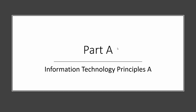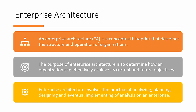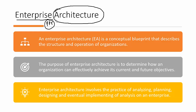So Part A is Information Technology Principles. The first concept we need to understand is enterprise architecture. When we talk about enterprise, it's all about PPT — People, Process, and Technology — and how they work together depending on what architecture you've adopted. Architecture is just like a blueprint.